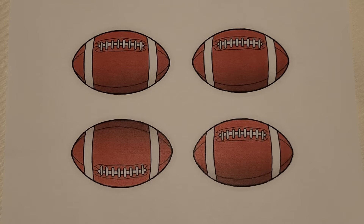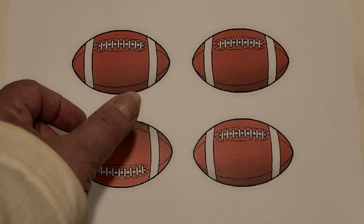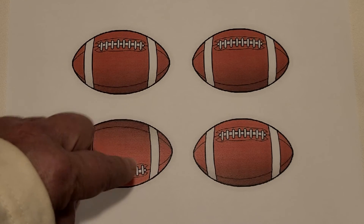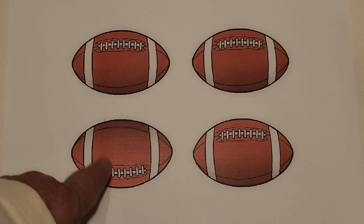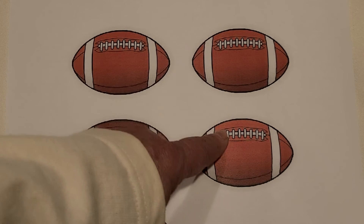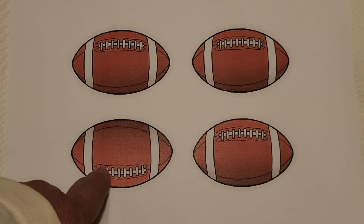Here we have a football. Can you see the football that is different? If you said this one, you're correct. This football is turned around, so its laces are at the bottom. These have their laces at the top. This one has its laces at the bottom. This one looks different.